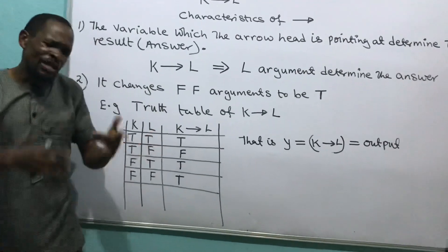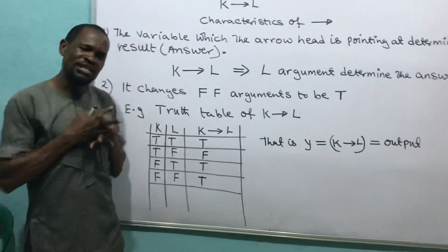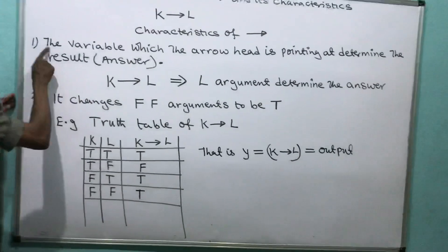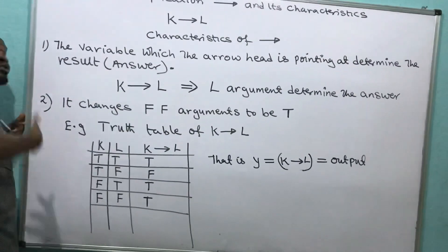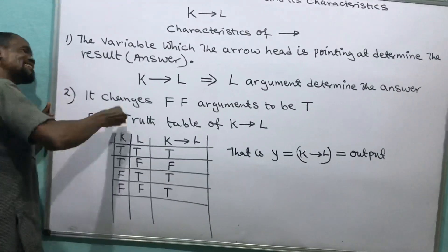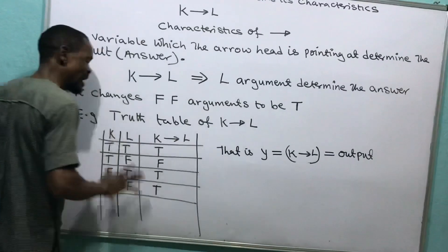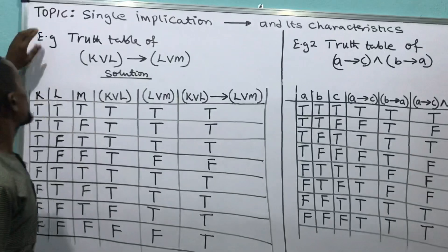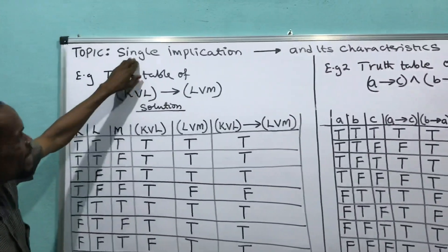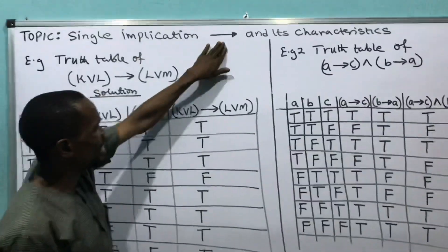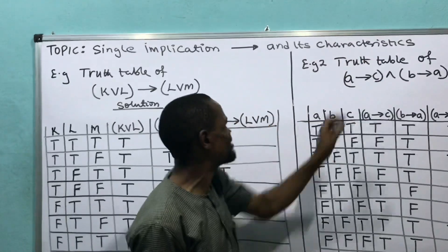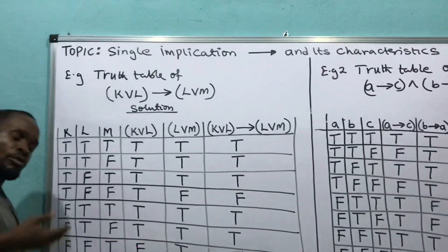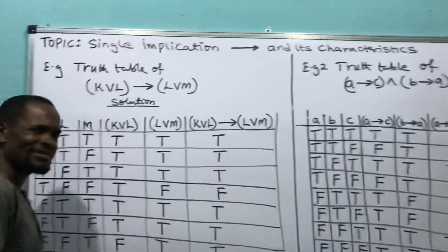Can I repeat again? The one arrow pointing at determines the result. He changes false-false to the word true. The one arrow pointing at determines the result — that's the one who will tell you the answer. He changes false-false to the word true. And that's all about it. Let us look at more examples. We are still on single implication — looking at the symbol and its characteristics.